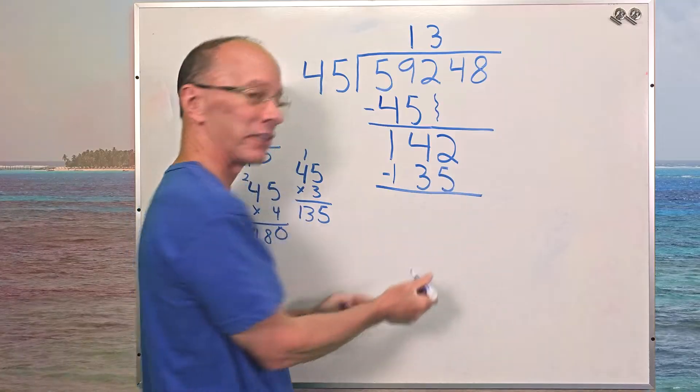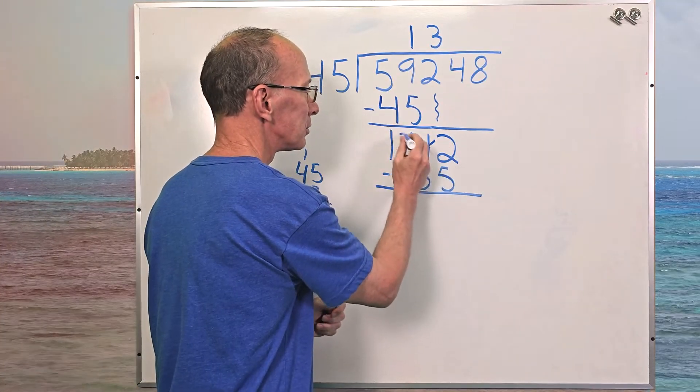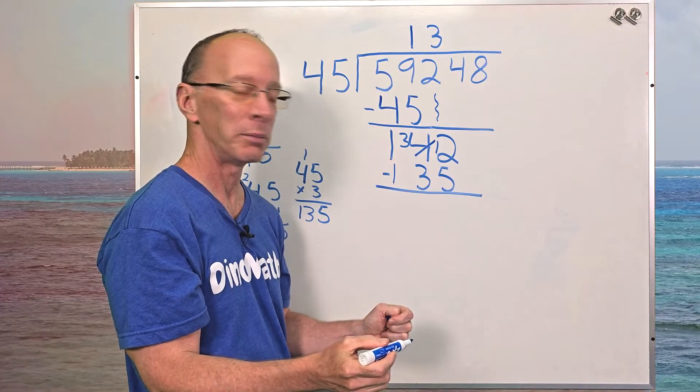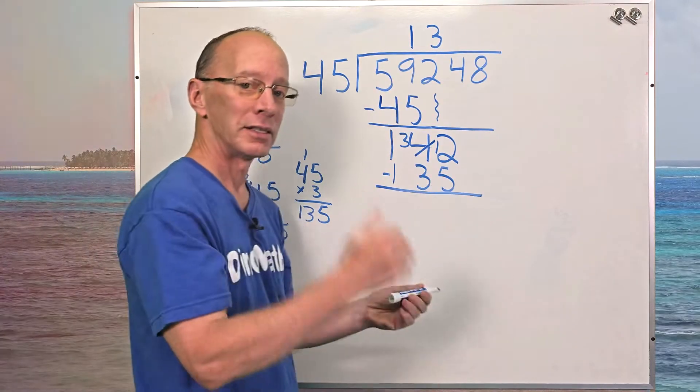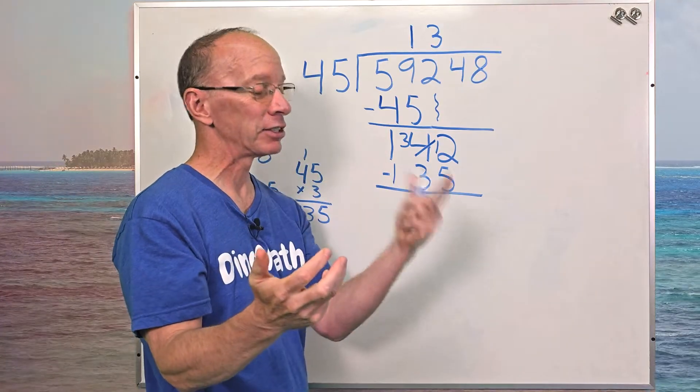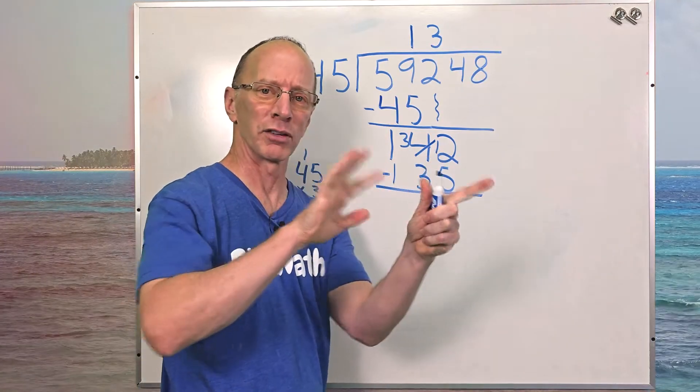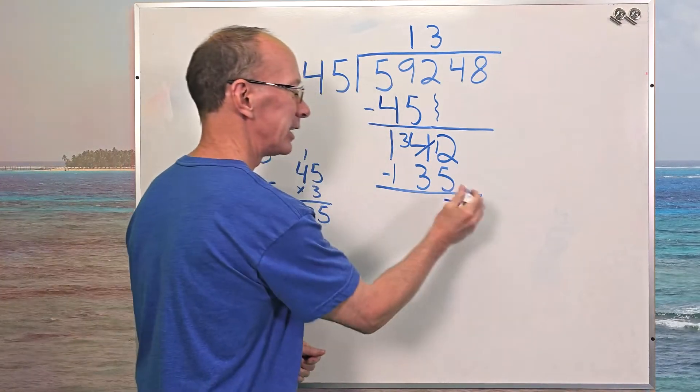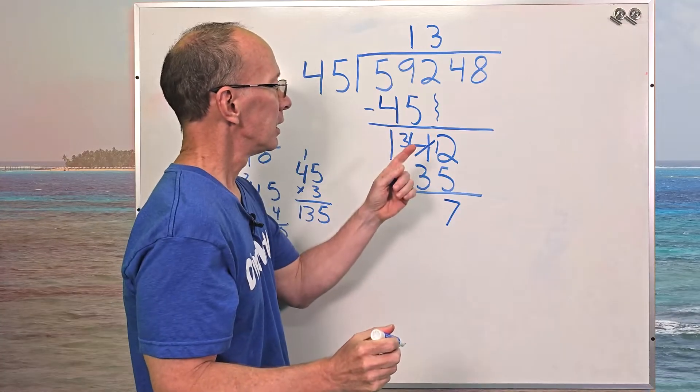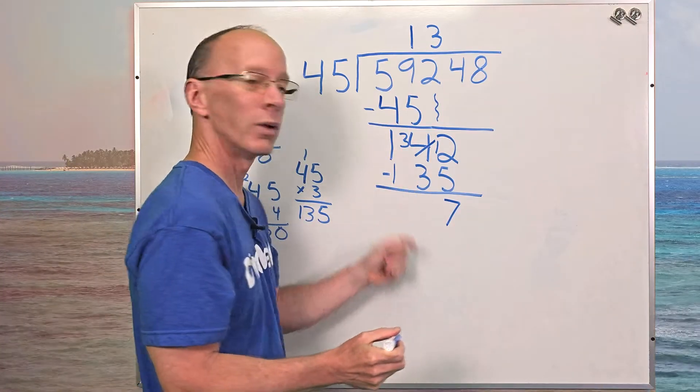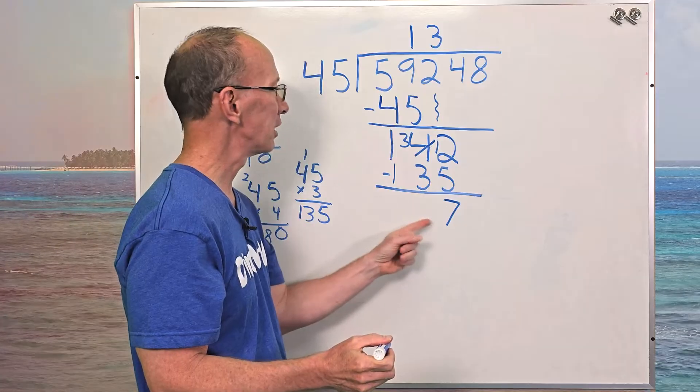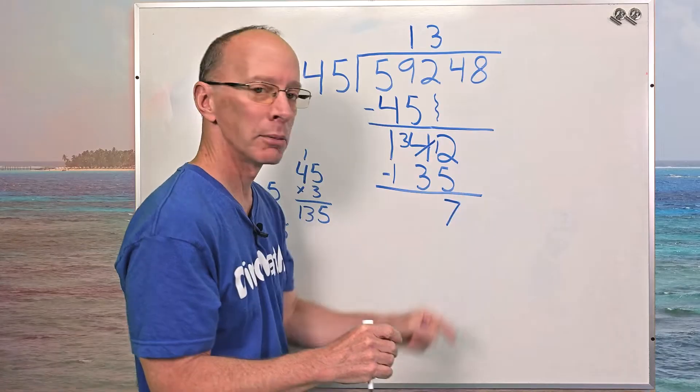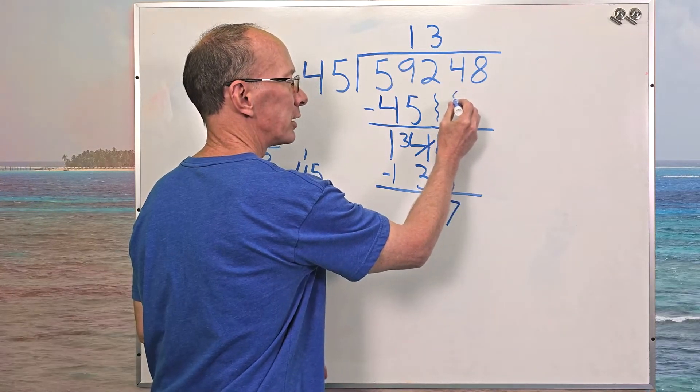Let's go ahead and subtract. Two minus five can't do it, I need to borrow. So turn that into a 3 and this is a 12. So 12 minus 5, what would that be? Five, six, seven, eight, nine, 10, 11, 12. That would be 7. Three minus three, zero. One minus one, zero. I don't need to put the zeros there. I have a remainder of 7, but I'm not done yet. I still have another number to bring down. That would be that 4. So just bring that down.